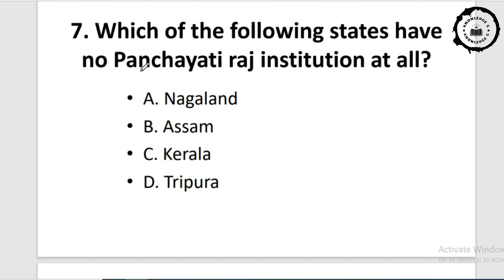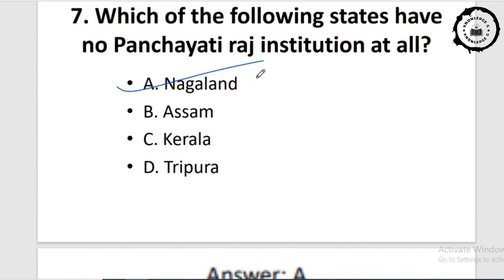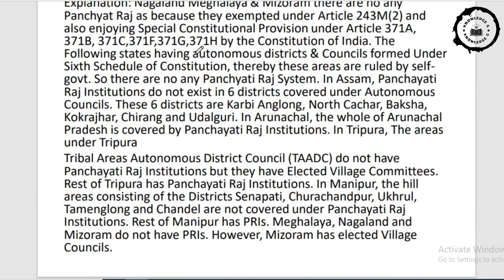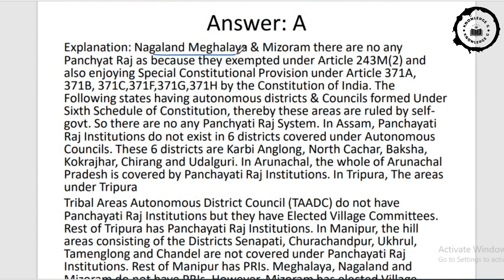Question seven: which of the following states have no Panchayati Raj institution at all? Option A: Nagaland. Option B: Assam. Option C: Kerala. Option D: Tripura. The answer is option A — Nagaland. Nagaland, Meghalaya, and Mizoram have no Panchayatiraj, as they are exempted under Article 243M(2) and also enjoy special constitutional provisions under Articles 371A, 371B, 371C, 371F, 371G, and 371H.